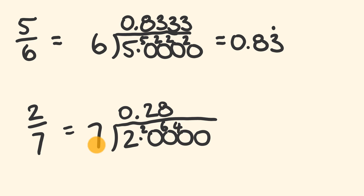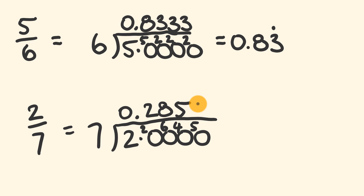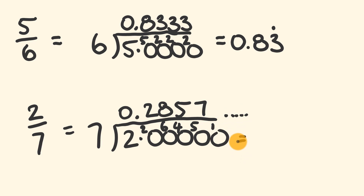How many times does 7 go into 40? That's 5 times — 7 fives are 35 — so we have 5 remainder. Finally, how many times does 7 go into 50? 7 sevens are 49, so that's a 7, and we have 1 remainder. We can continue this on and on, but we're only going to take this to 4 decimal places. So the answer is 0.2857.